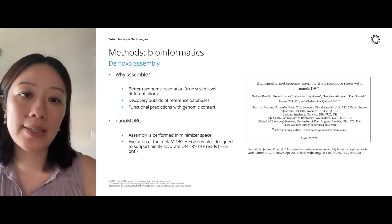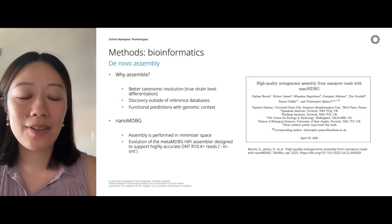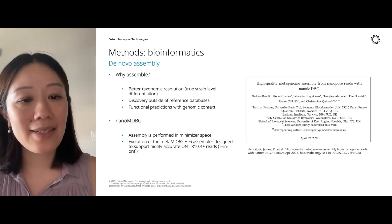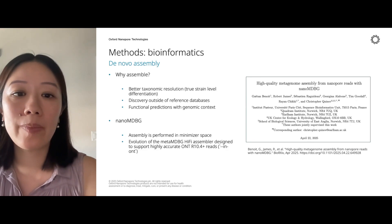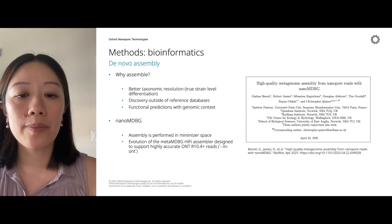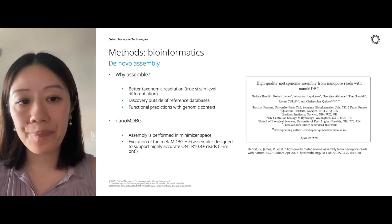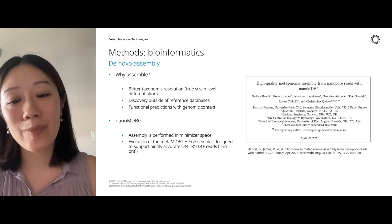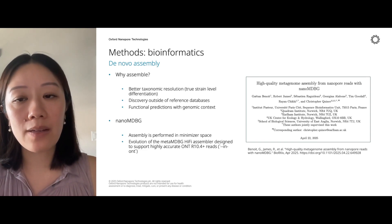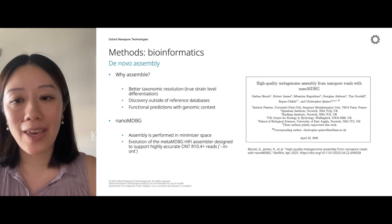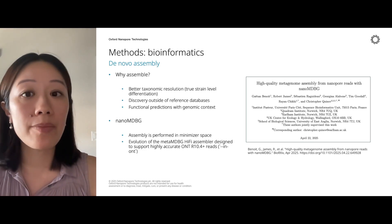There are a number of metagenomic assemblers out there, and I wanted to highlight a recent one we recommend called NanoMDBG. It's an extension of the MetaMDBG assembler originally designed for PacBio HiFi reads, but extended to support ONT R10.4 plus reads, which are highly accurate. You just run MetaMDBG with the ONT option. Assembly is performed in minimizer space, where minimizers are reproducibly subsampled sets of K-mers — ideal for long reads and minimizing computational memory and time requirements.